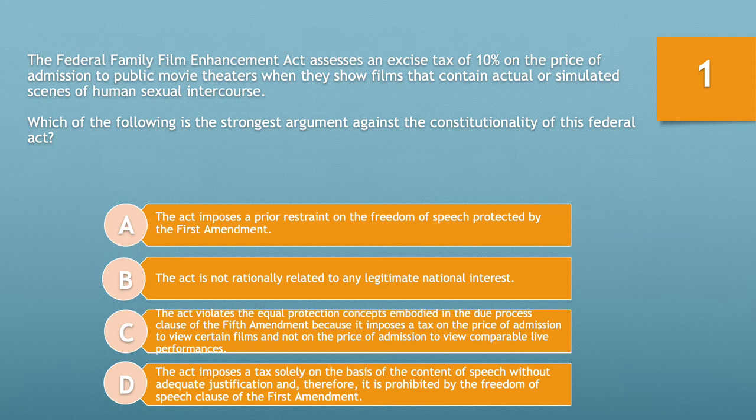Question number one. The Federal Family Film Enhancement Act assesses an excise tax of 10% on the price of admission to public movie theaters when they show films that contain actual or simulated scenes of human sexual intercourse. Which of the following is the strongest argument against the constitutionality of this federal act?